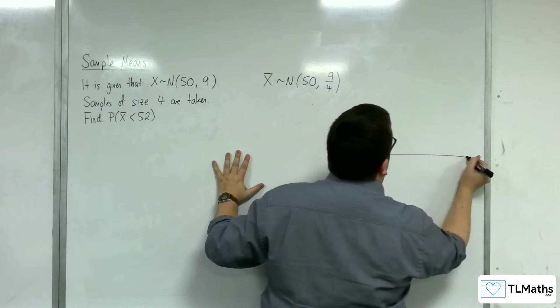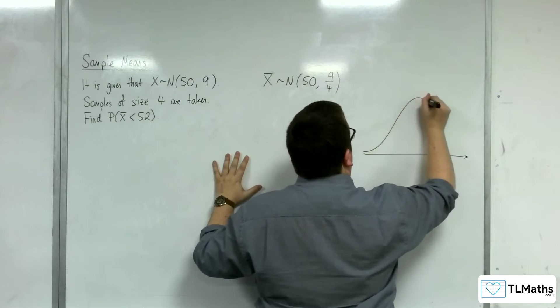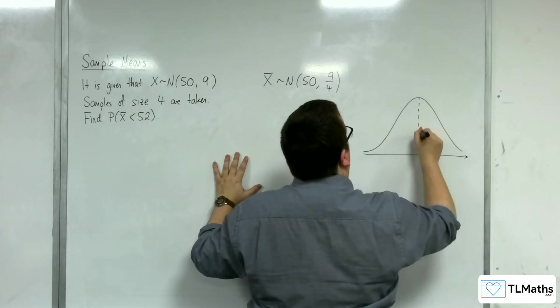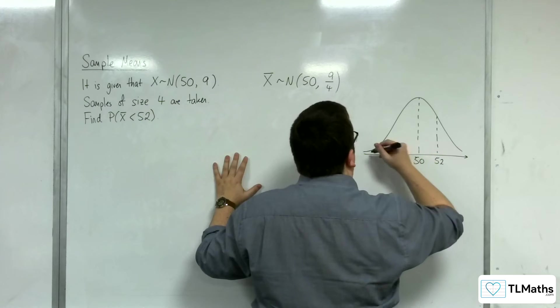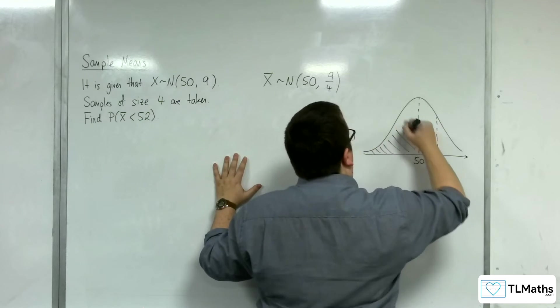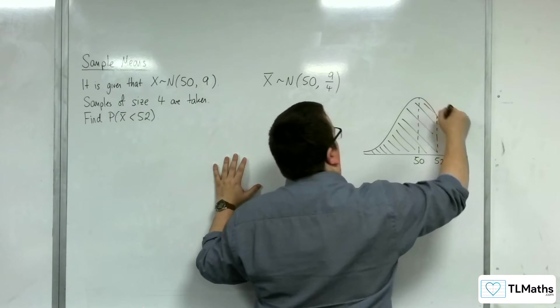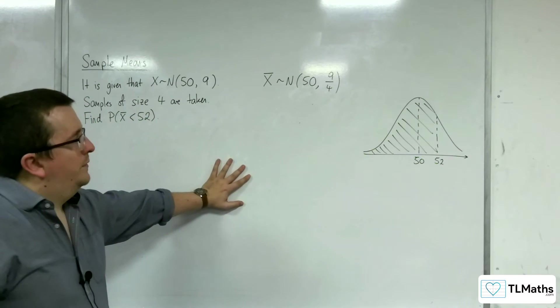So let's draw a diagram so we can visualize what's going on. Here's my normal distribution curve. So the mean is 50, 52 is over here, and I want to find that probability there.